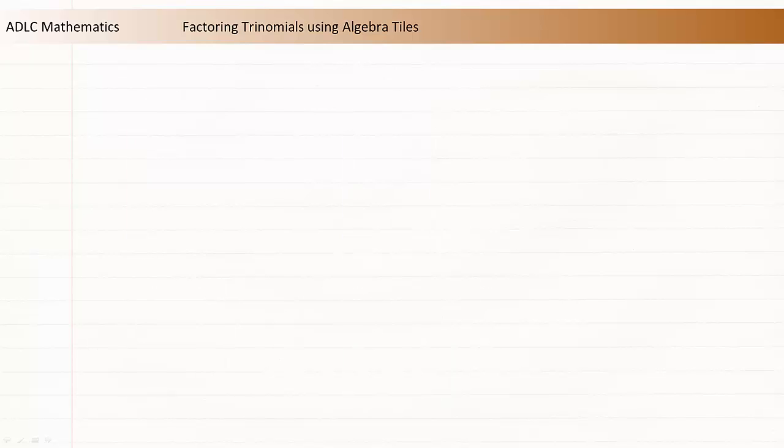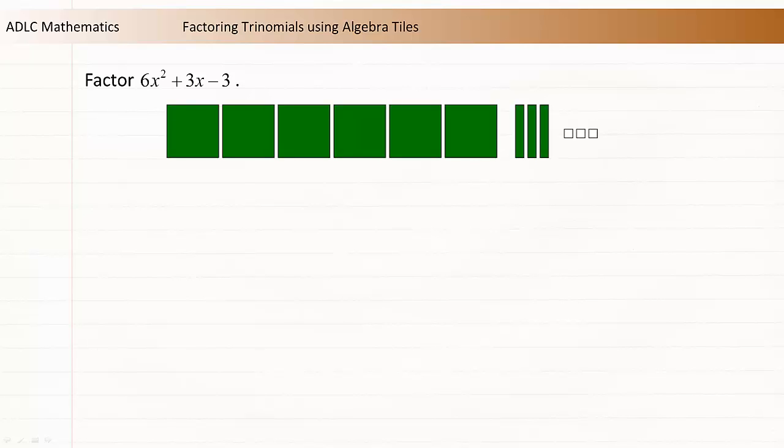Let's look at an example in more detail. Factor 6x² + 3x - 3. Begin by representing this trinomial using algebra tiles.